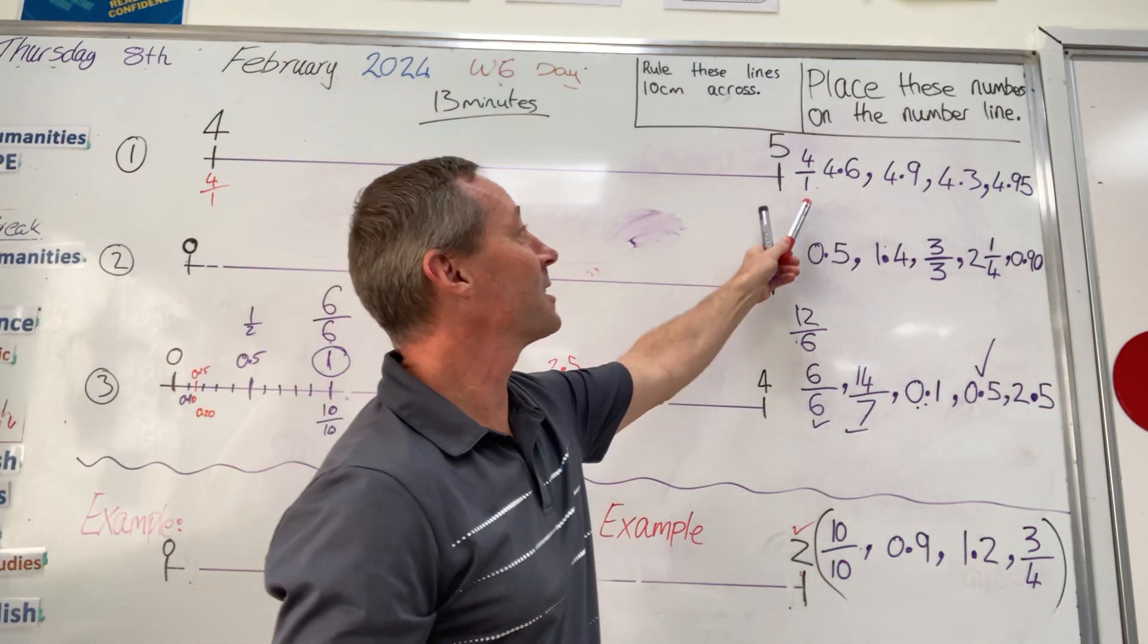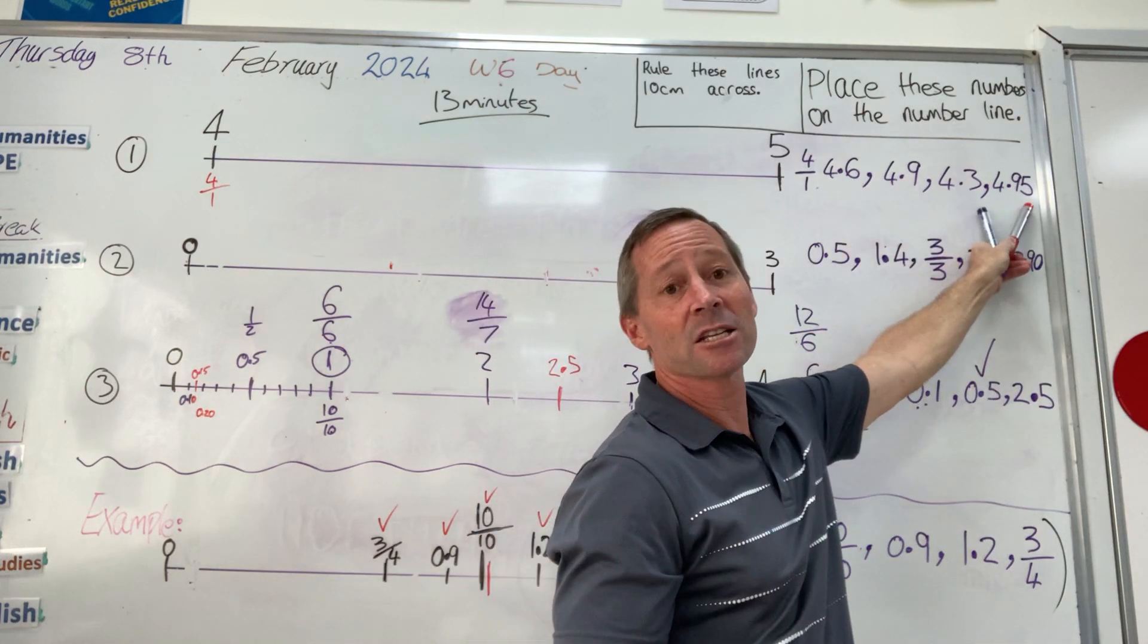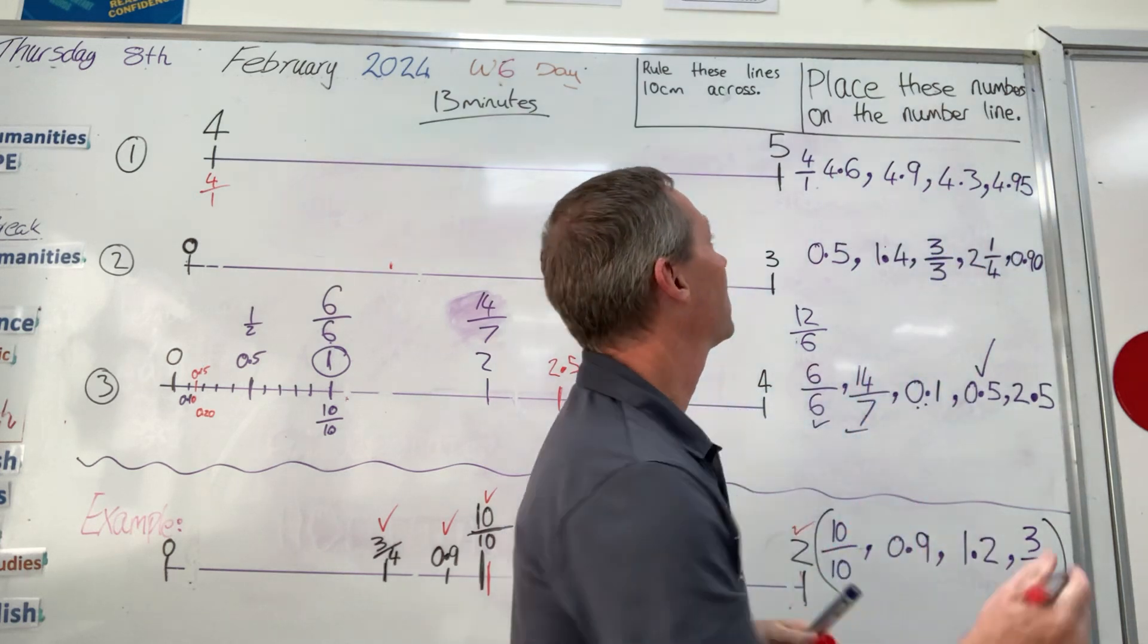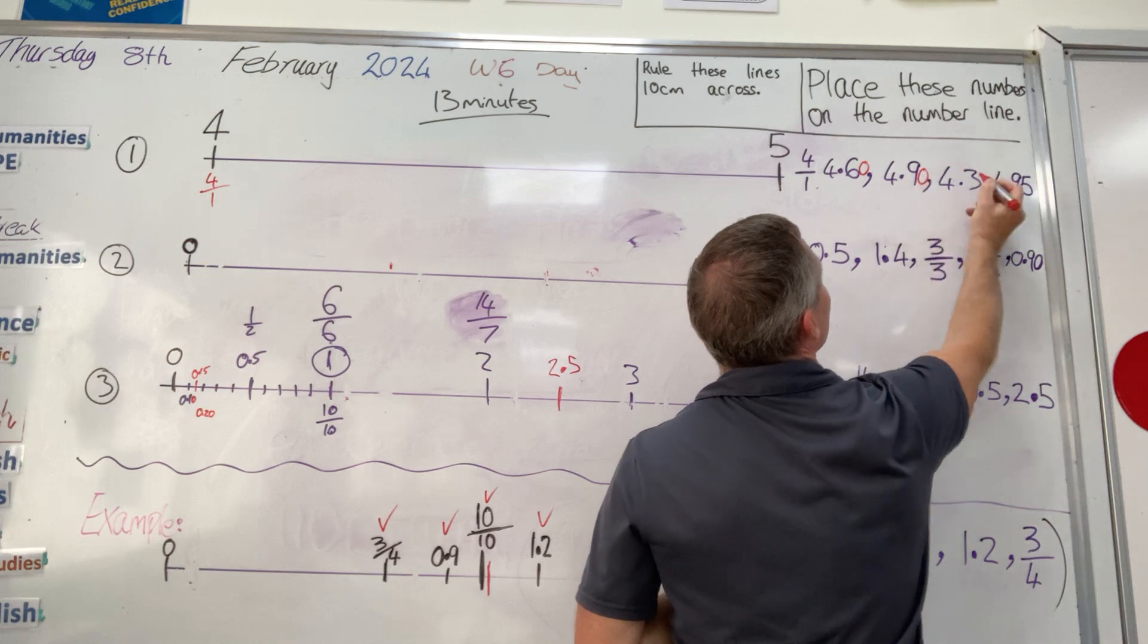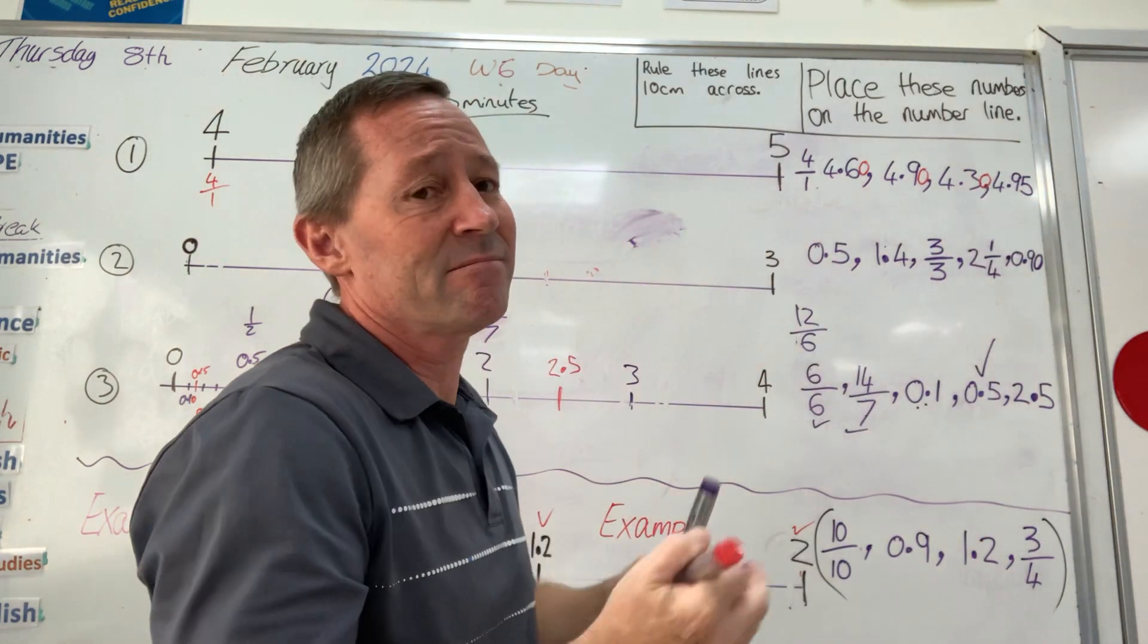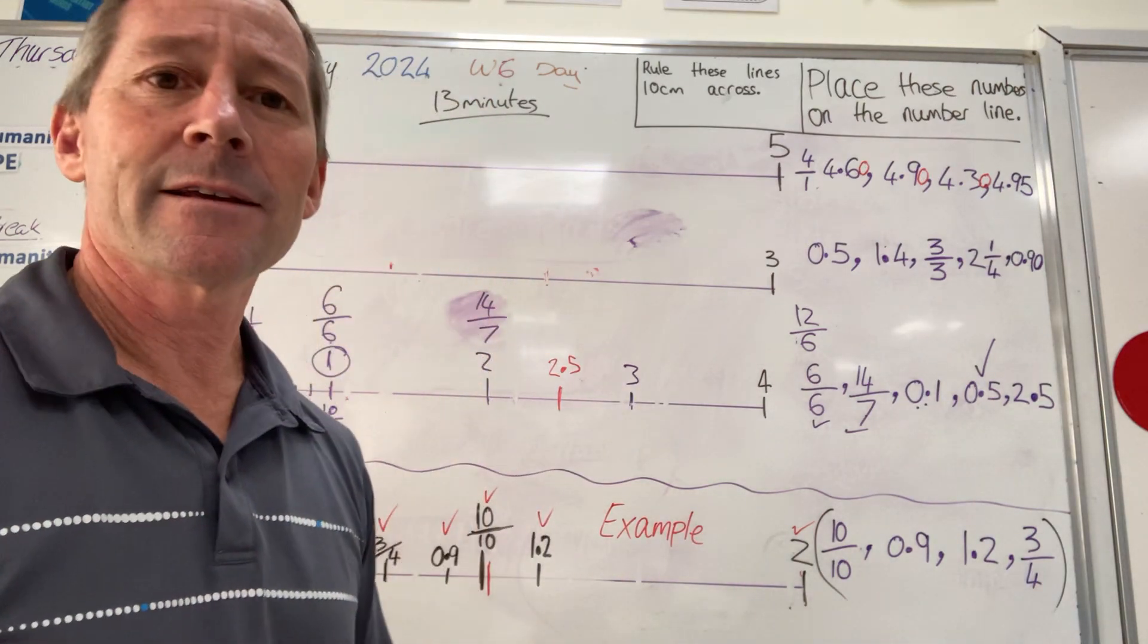So in this particular case, I've got tenths, tenths, tenths, this one is hundredths. In order to help me place these accurately, I can put a placeholder on the end. That way, I've got the same amount of digits. I think you can do that, give those a go.